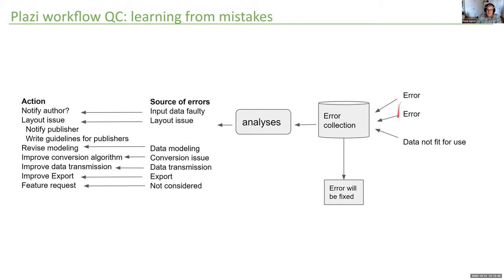Schematically, we collect individual error messages and entire error lists, fix errors as quickly as possible, and analyze them to find sources. Some errors we cannot do anything about — for example, if a geocoordinate is wrong in the document, we cannot change it. But there are also things we never considered, for which we write feature requests. We also talk to publishers — for example, working with EJT and Pensoft to write guidelines on how to publish material citations.